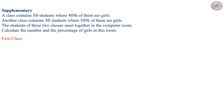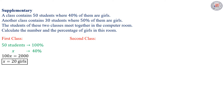In the first class, we have 50 students, they constitute 100%. We have 40% of them are girls. Then the number of girls in this class is x. If we make a cross multiplication, then we get 100x equals 2000, then x equals 20 girls.